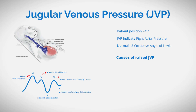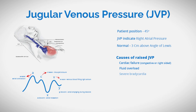Elevated JVP may indicate various conditions, including heart failure — either biventricular or isolated right heart failure — fluid overload, and severe bradycardia.